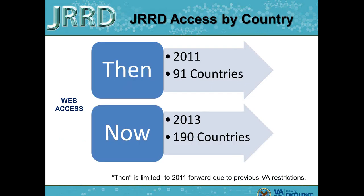With respect to then and now and country of origin, we're also looking at access. Since 2011, we have been able to track JRRD web online access by countries. In 2011, 91 countries came to the JRRD website to access content. In 2013 we are up to 190 countries. This reflects the need for international collaboration and international research.